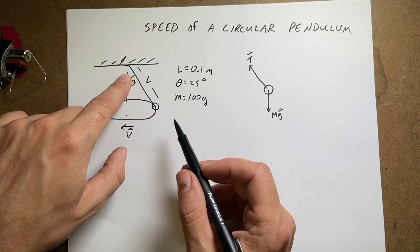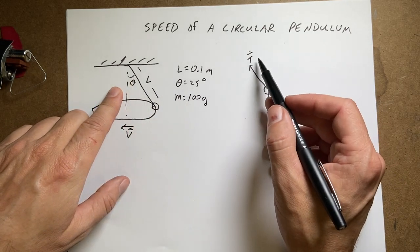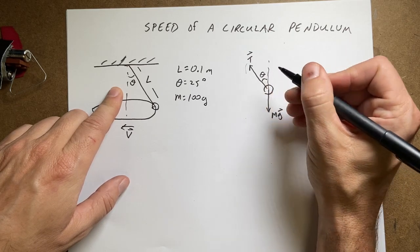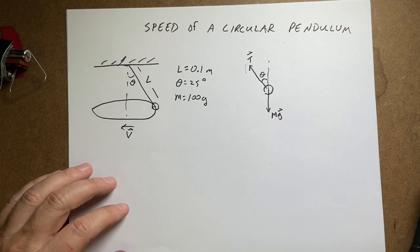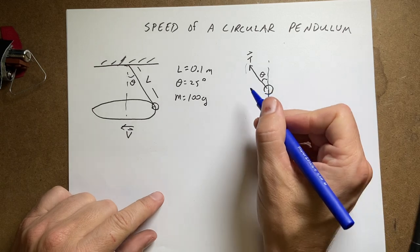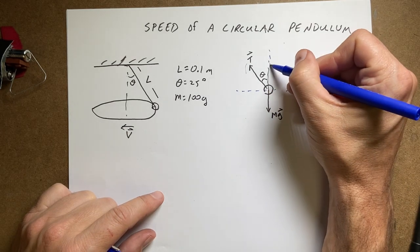Now if you look at the diagram, this angle right here is theta. So this angle is theta. And let's go ahead and put in our coordinate system. Let's call this the x-axis. And this the y.